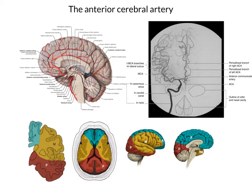This image is in the coronal plane — we're looking head-on, face-on to the head, seeing the coronal plane. You can see the extensive distribution of the middle cerebral artery, and very nicely you can see the distribution of the anterior cerebral artery near to the midline.